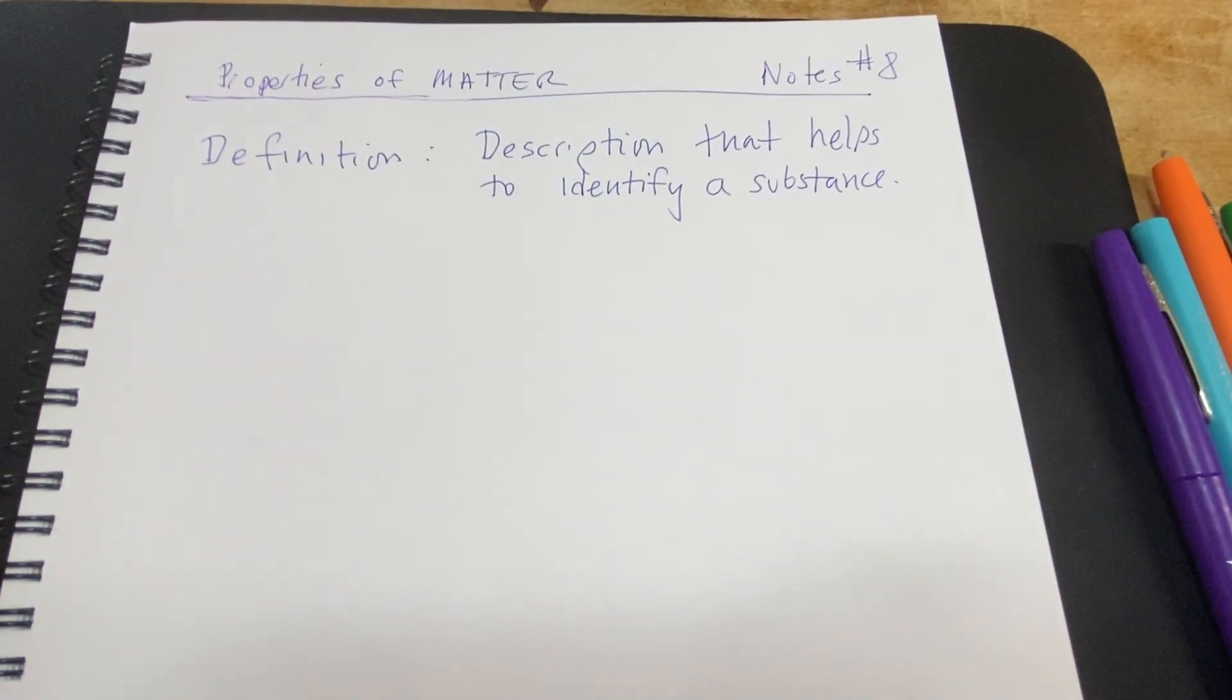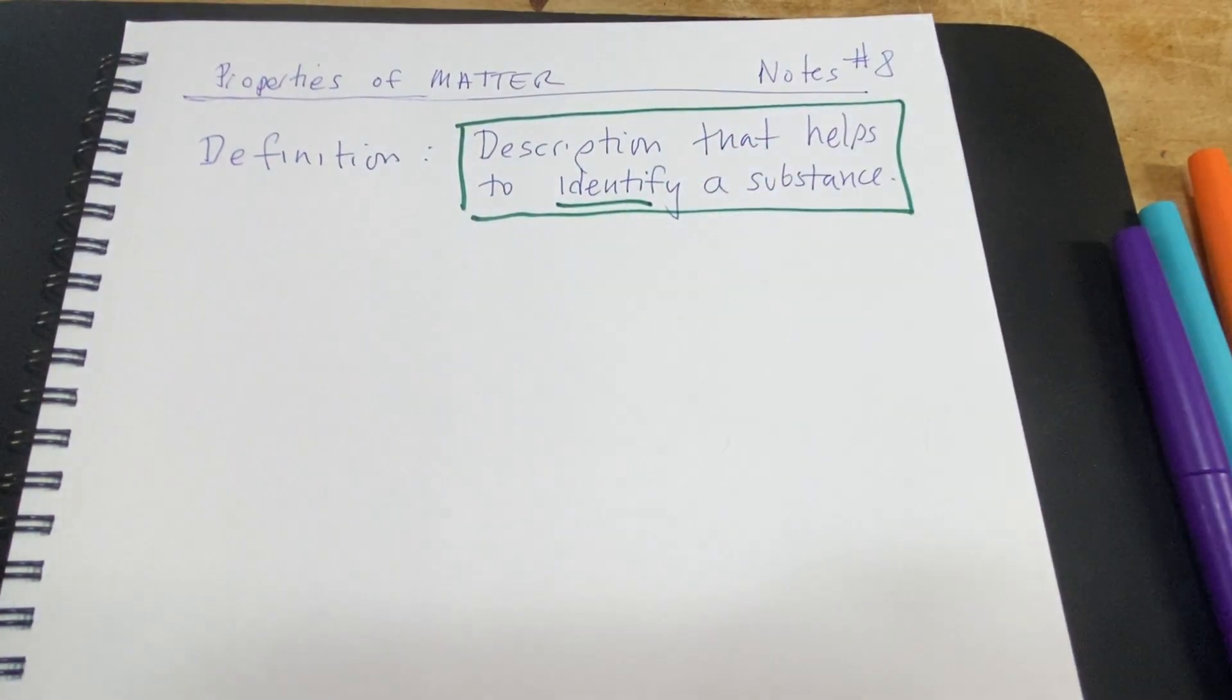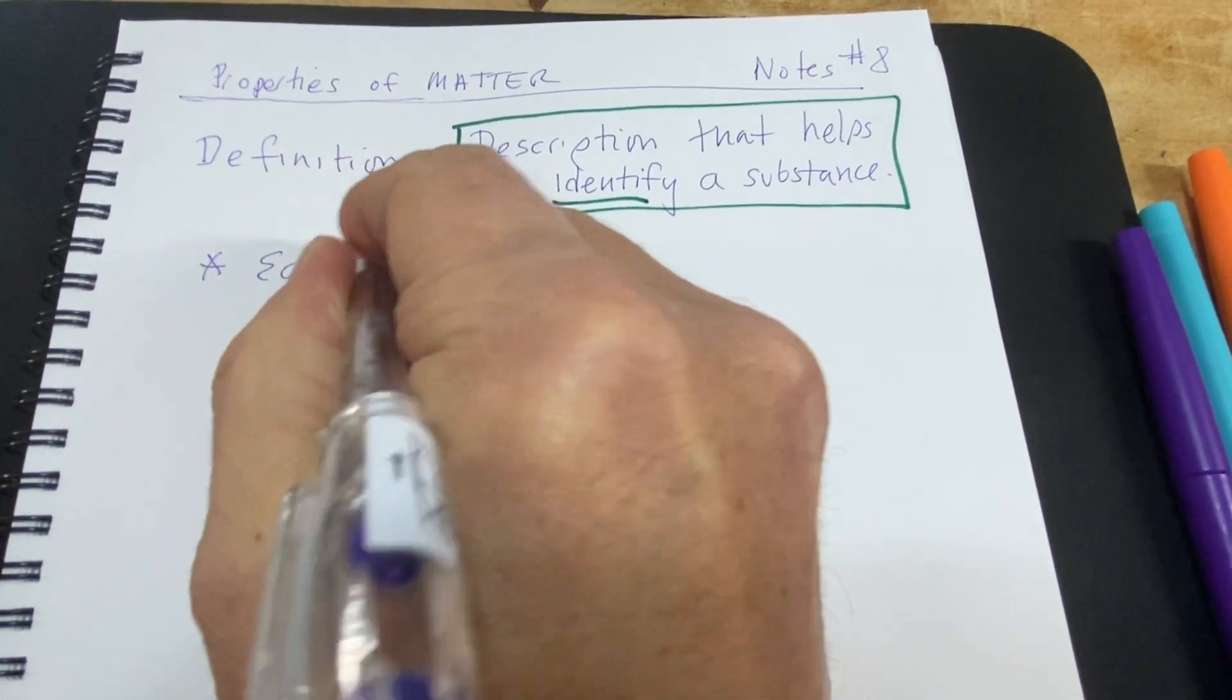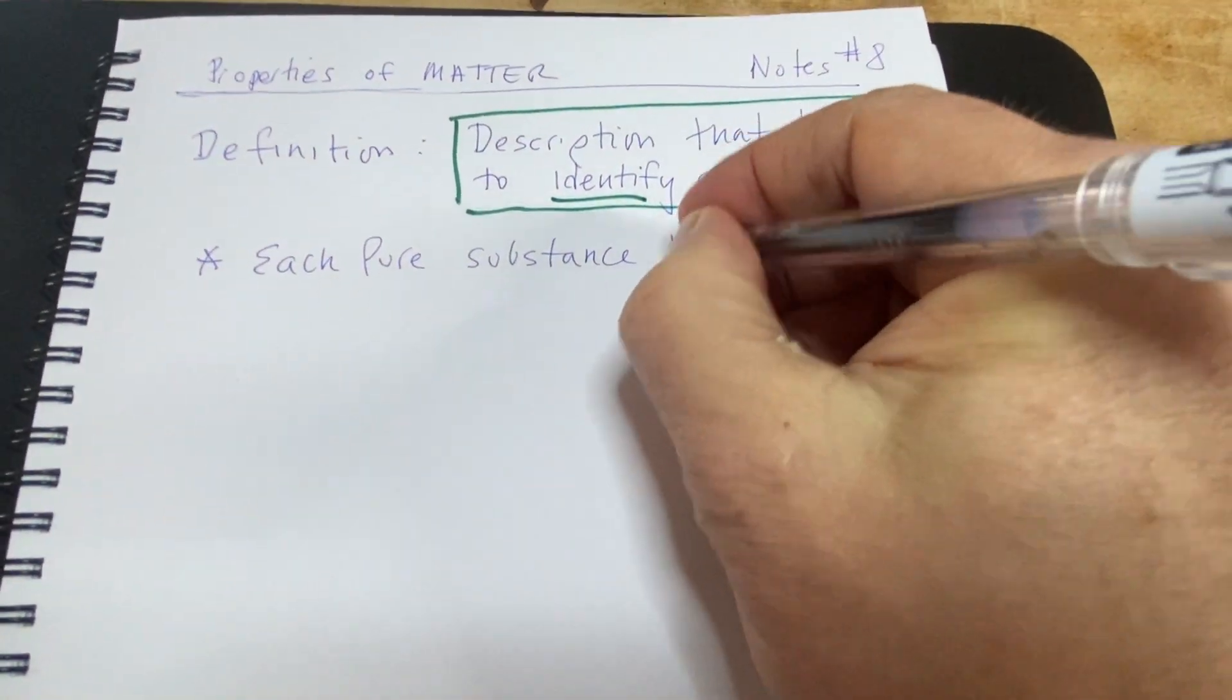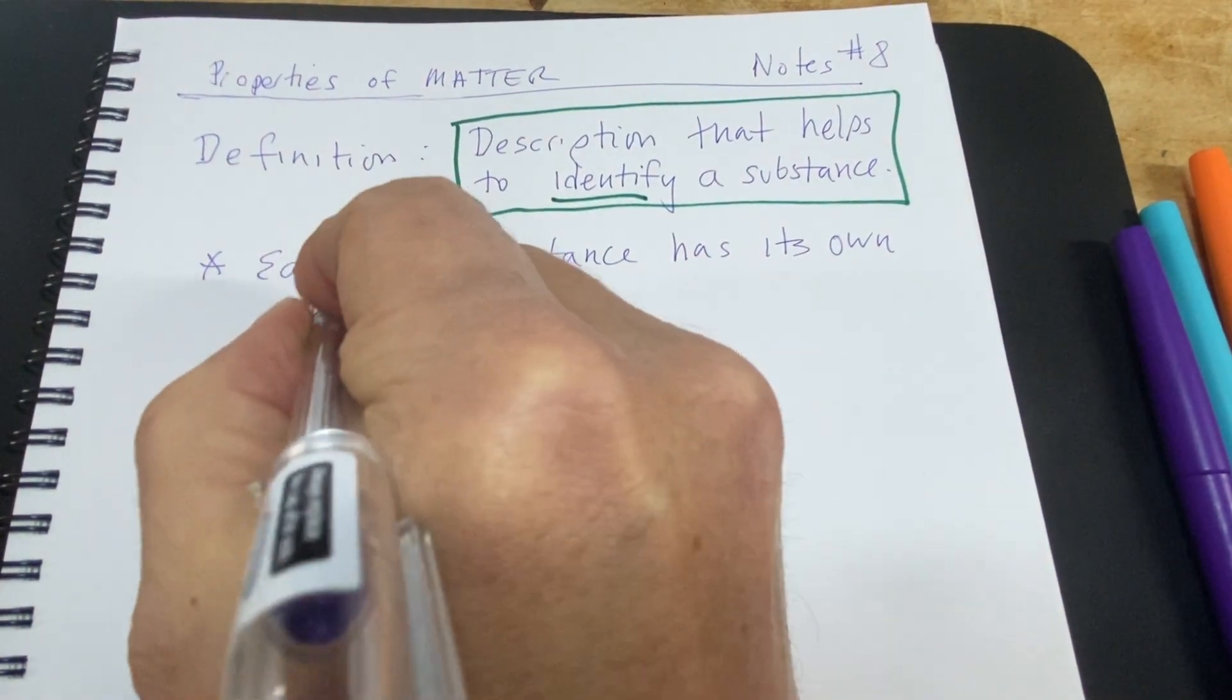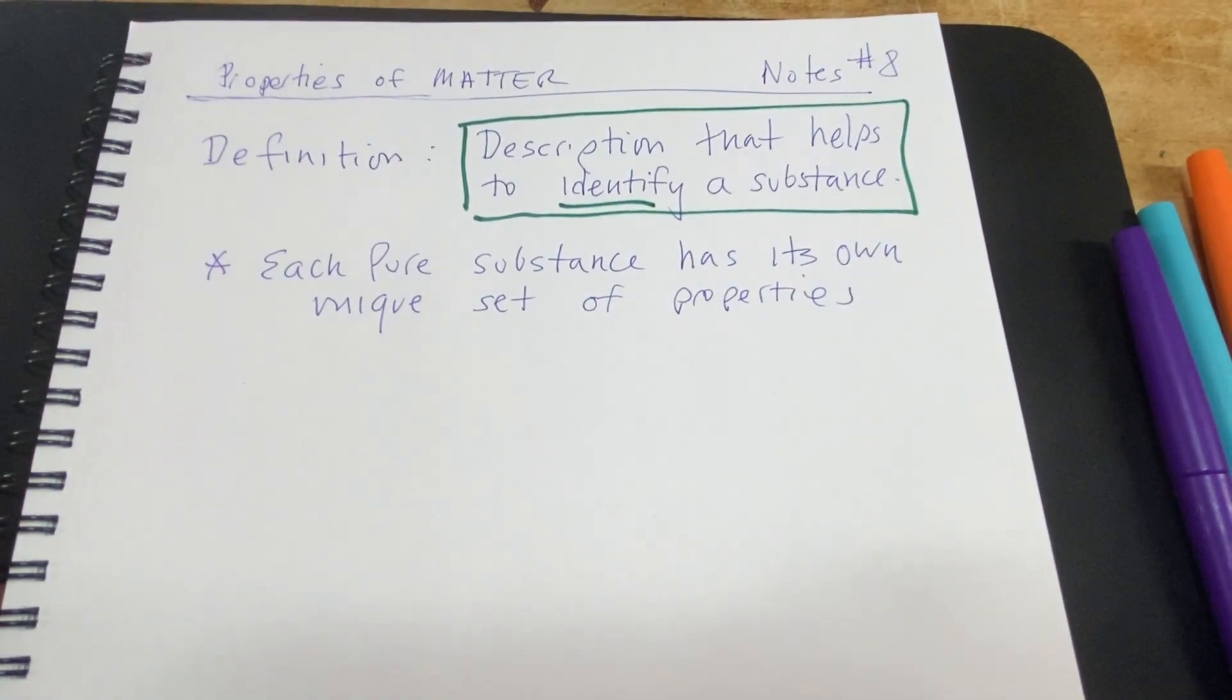There's all these different kinds of matter in the world, and one of the jobs of a scientist is to figure out what is a particular material and how do we identify it. We start with the idea that we need something called a pure substance. Each pure substance, that's something where all the particles are the same, is going to have its own set of unique properties.